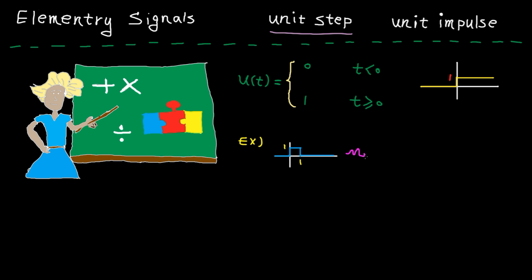If you look at it carefully, you can easily see the function is basically u of t minus the shifted version of u of t by one unit. So on the negative side, we get 0 minus 0, which is 0. Between 0 and 1, the top function is 1 and the bottom is 0, so we get 1 minus 0, which is 1. For t greater than 1, both functions are 1, so we get 1 minus 1, which is 0.